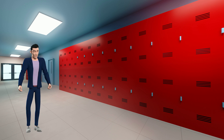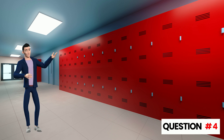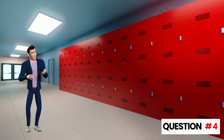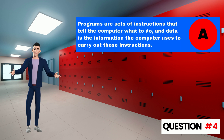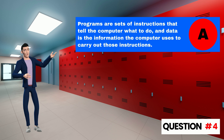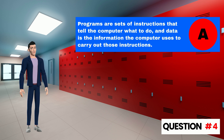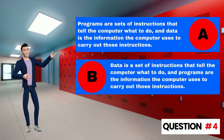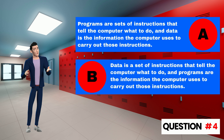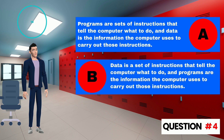Question 4 is the final question and you must decide which is correct. Is it A — programs are sets of instructions that tell the computer what to do, and data is the information the computer uses to carry out those instructions? Or B — data is a set of instructions that tell the computer what to do, and programs are the information the computer uses to carry out those instructions?